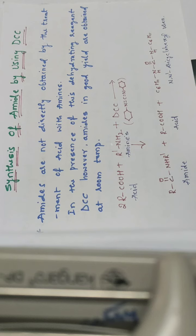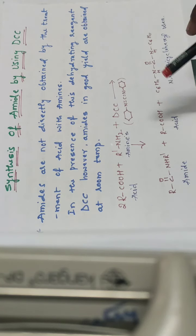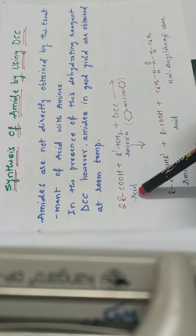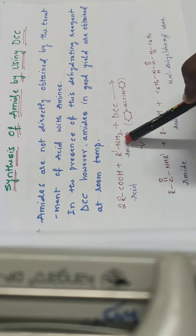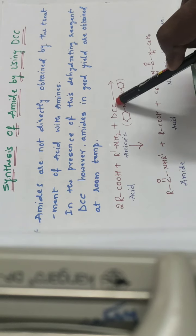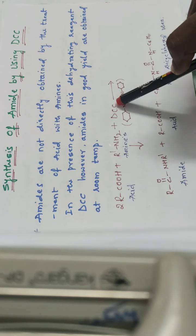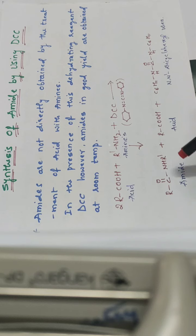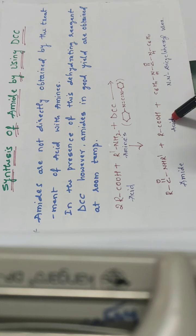Initially, DCC converts the carboxylic acid into an anhydride. That anhydride, after reacting with amines, gives the final product amide. So in the reaction, the acid reacts with amines — these are the reactant molecules — and DCC is the reagent. Then we get the product amide and the byproduct acid.